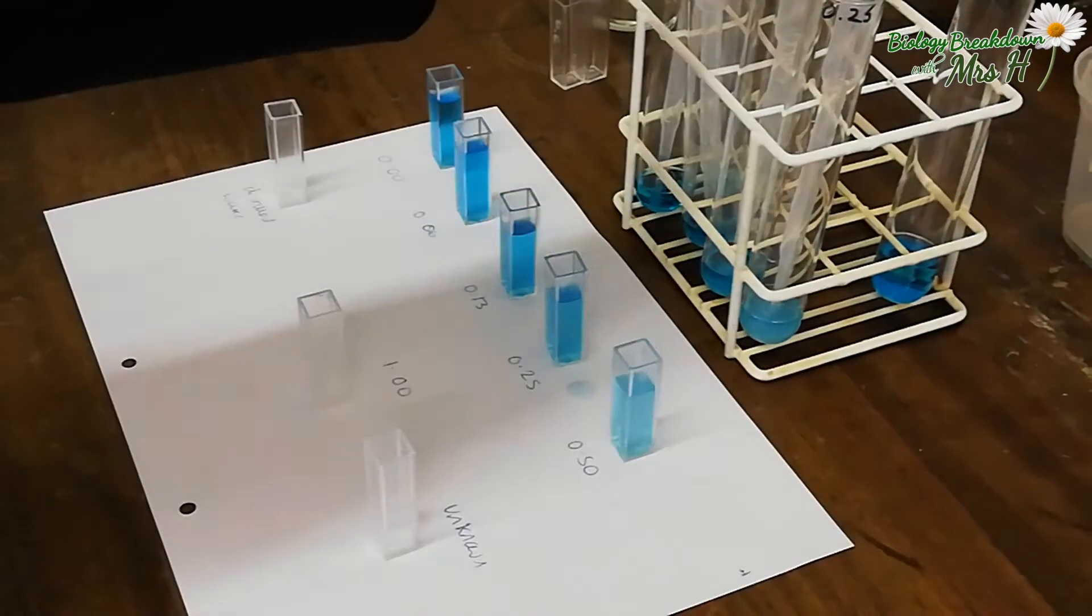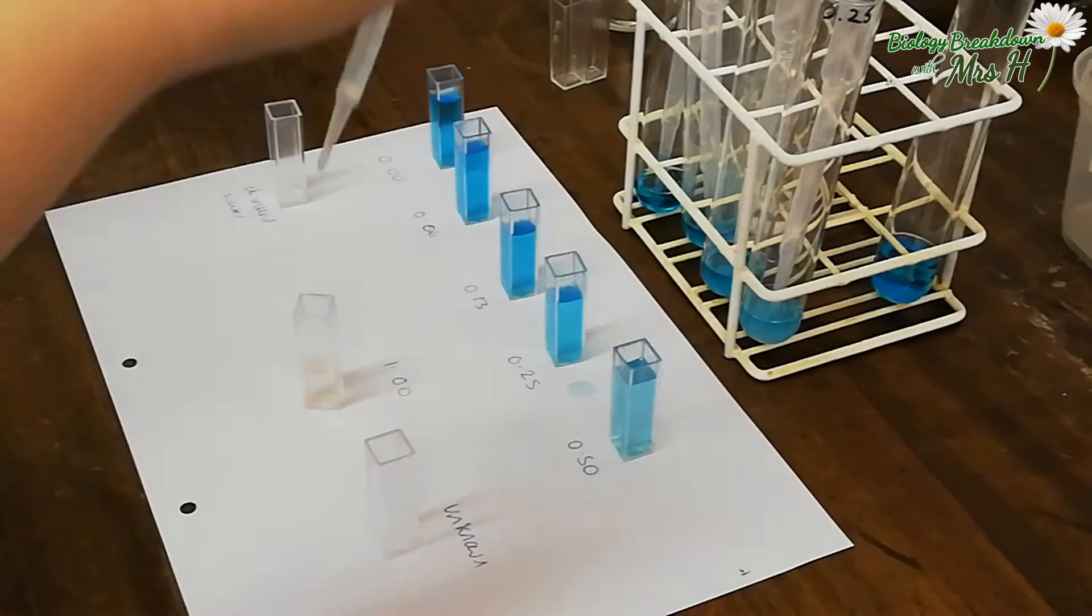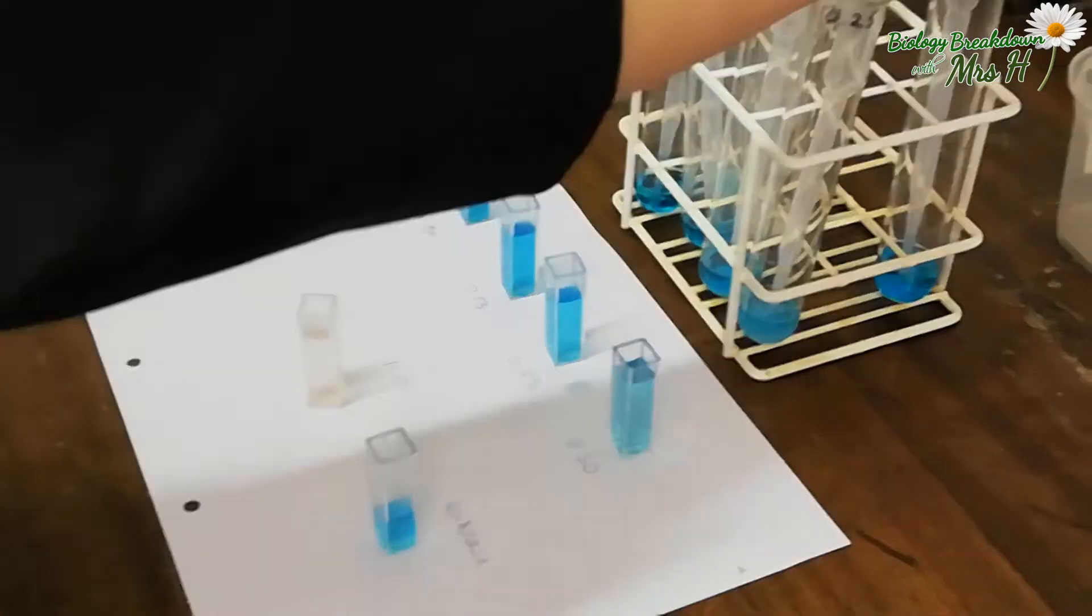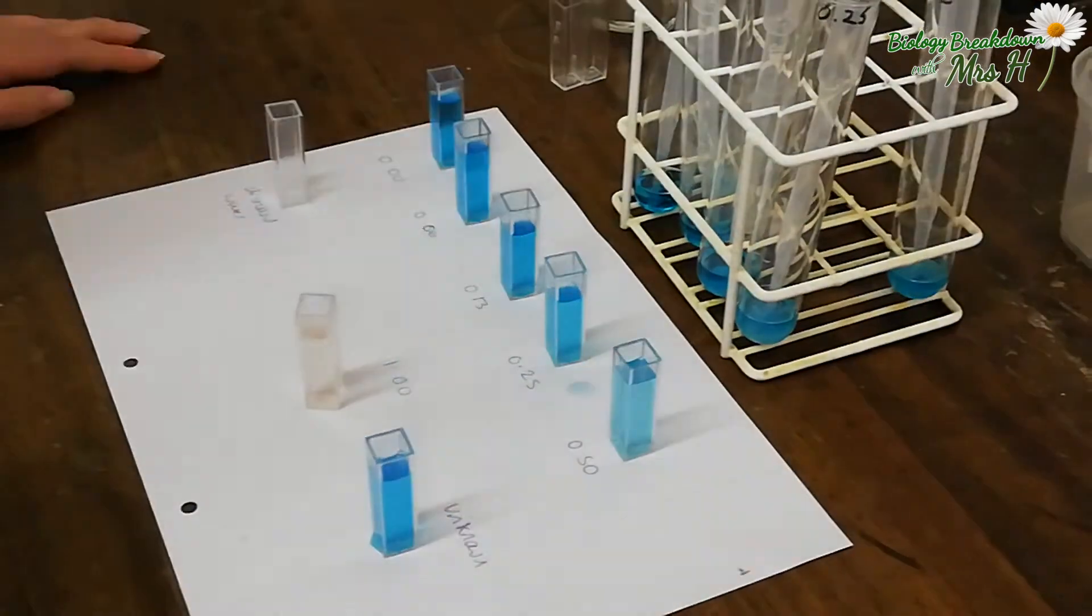And finally, you'll put distilled water into the last cuvette. This is so you can use this one as a reference to calibrate the colorimeter.